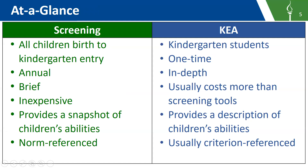After discussing the two-prong approach for school readiness, the stakeholder group realized the need to better define screening versus assessment and the distinction between the purpose and properties of each. Every child should have a screening at least once a year prior to entering Kindergarten, but a KEA is likely only completed one time when the child first enters Kindergarten. A screening is usually brief and inexpensive because it's a snapshot of the child's abilities, while an assessment at Kindergarten is more in-depth, costs more, but provides much more description of the child's abilities, strengths, and challenges.